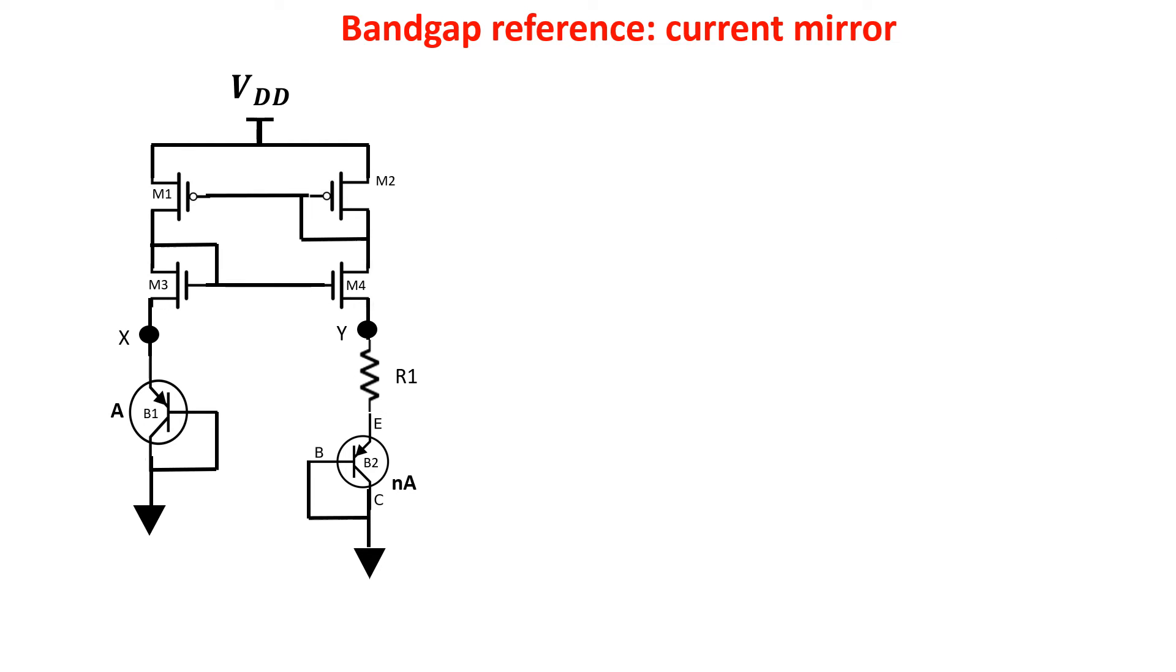Here we see the current mirror configuration which keeps equal the voltages of point X and Y and keeps the currents in the two branches equal. The currents in M1 and M2 are more or less equal because the two matched MOSFETs have the same gate-source voltage. But a little error comes from the slightly voltage difference in the two drains, so another couple of matched MOSFETs is added, M3 and M4, keeping the two branches of the mirror identical and thus keeping voltage X equals voltage Y. I leave a video about current mirrors in the description.